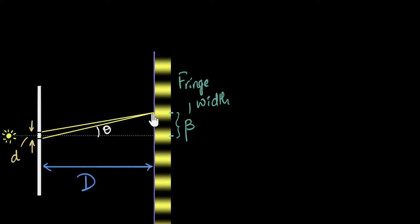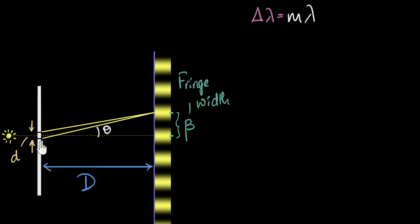So how do I figure out the angle at which constructive interference is happening? We'll go back and ask: what is the condition for constructive interference? We've seen this before — for constructive interference, the path difference between the two interfering waves should equal an integral multiple of the wavelength lambda. Over here, one wave is traveling slightly more distance compared to the other because it's slightly farther from the slit. That extra distance is called the path difference. If that equals an integral multiple of a wavelength, we'll always find constructive interference.